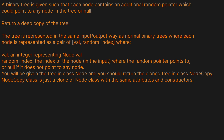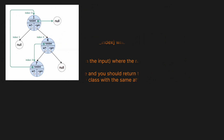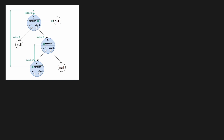Looking at an example tree, the root has a value of 1. Its random pointer doesn't point to anything and it has no left child. Its right pointer points to node 4, whose random pointer points to node 7. Node 4 has a left child which is node 7 and no right child. The left child, node 7, has a random pointer back to the root.